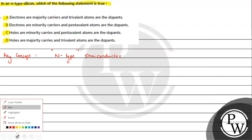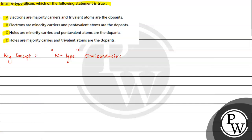We know that silicon is an intrinsic semiconductor and a Group 14 element, so its valence electrons will be 4. We will talk about the lattice — silicon forms 4 covalent bonds with neighboring silicon atoms. Now we will talk about the n-type.